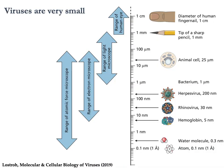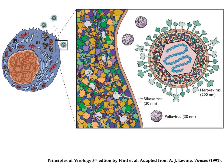The tiny size of viruses prevented us from understanding them for a long time. This is a log scale running from the diameter of someone's fingernail at one centimeter down to the size of an atom, almost eight orders of magnitude smaller. Most viruses are about 50 times smaller than the cells they infect.